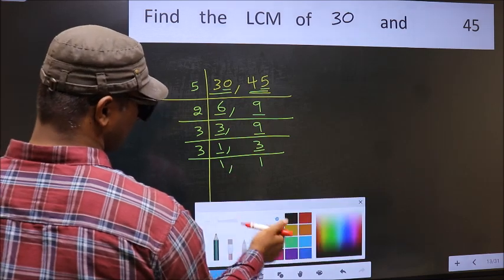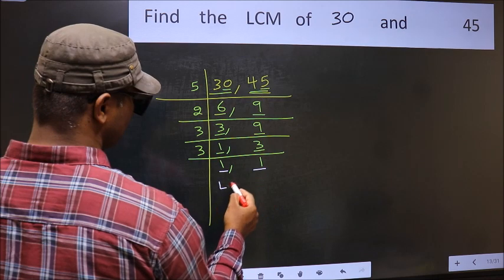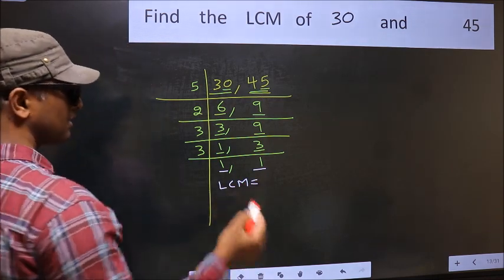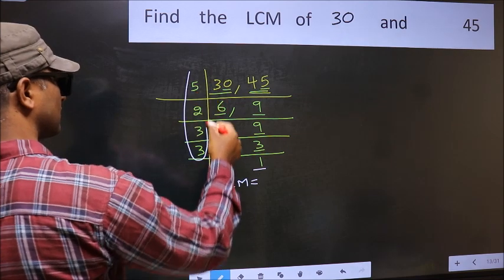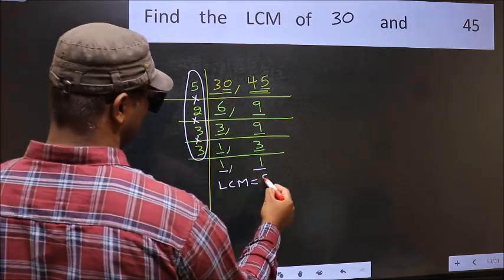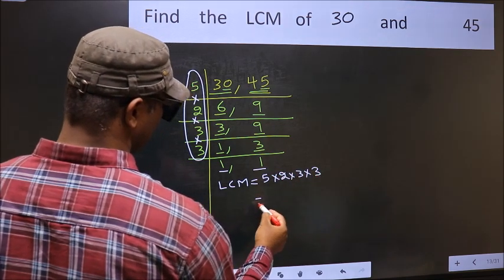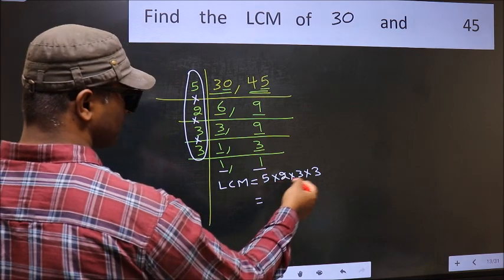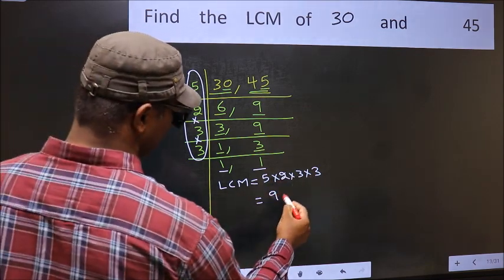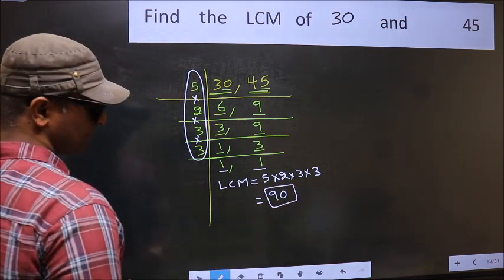We got 1 in both places. So our LCM is the product of these numbers — that is 5 times 2 times 3 times 3. When we multiply these numbers, we get 90. 90 is our LCM. Thank you.